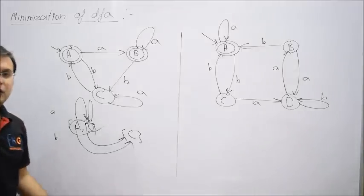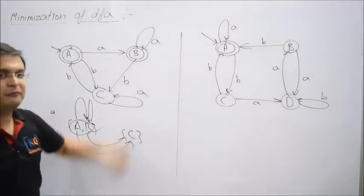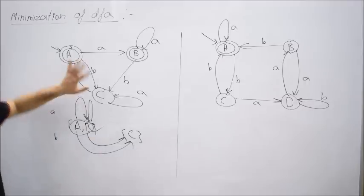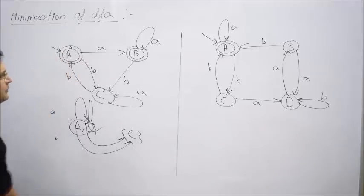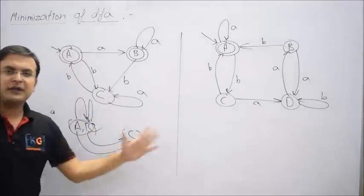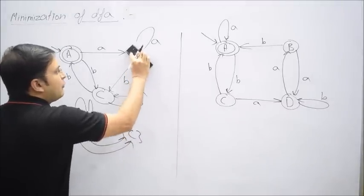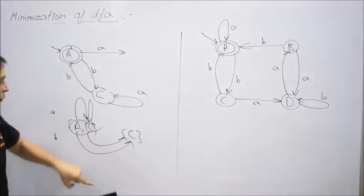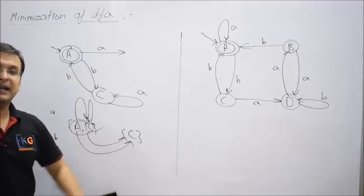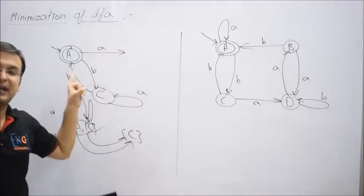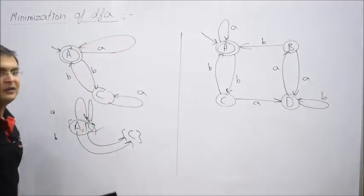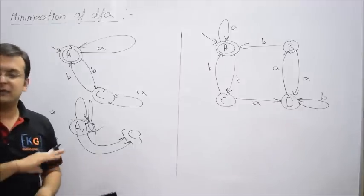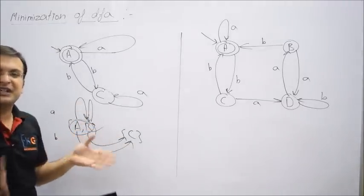Once we find that two states are equal, we must remove one of them. Either remove A or remove B. B should be the victim because A is the initial state — don't touch the initial state. When you remove B, all outgoing transitions are automatically removed. But what about transitions coming to B? Since A and B are equal, A takes the responsibility of B — whatever transitions were coming to B now go to A, creating a self-loop. All outgoing transitions of the removed state are removed, and incoming transitions redirect to the equal state.